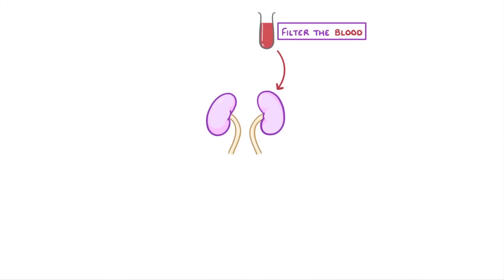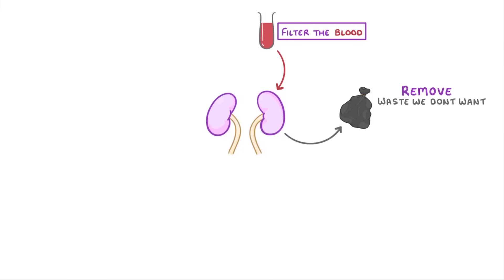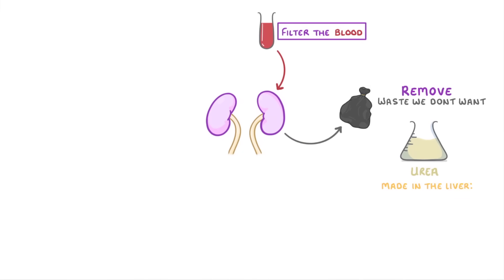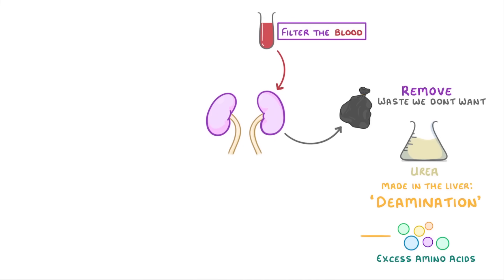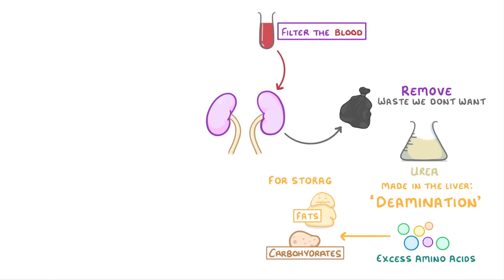The main job of the kidneys is to filter the blood and remove all of the waste that we don't want. The main waste product you need to know about is urea, which is made in the liver during the process of deamination, which is where excess amino acids that we don't need anymore are converted to fats and carbohydrates for storage.